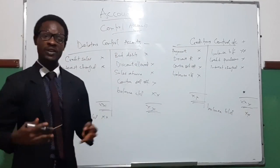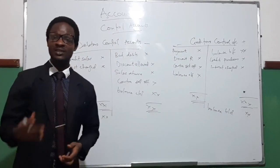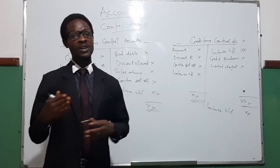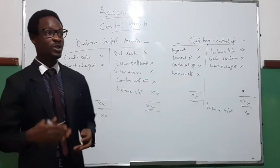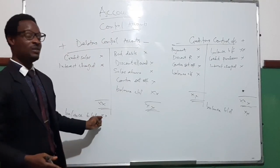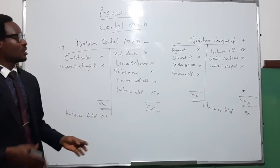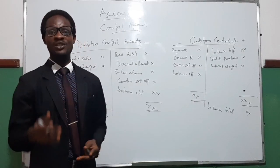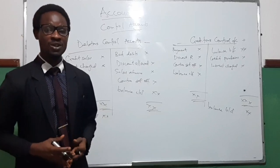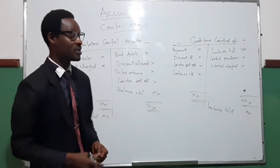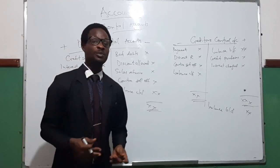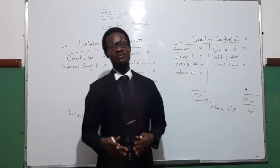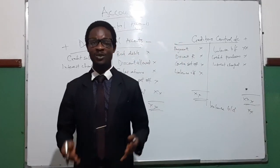To recap: the debtors control account is the same as the sales ledger control account — it shows the value of debtors, which most times will have a debit balance. The creditors control account is the same as the purchase ledger control account — it shows the value of creditors, and at the end of the period, it most times will have a credit balance as the balance brought down.